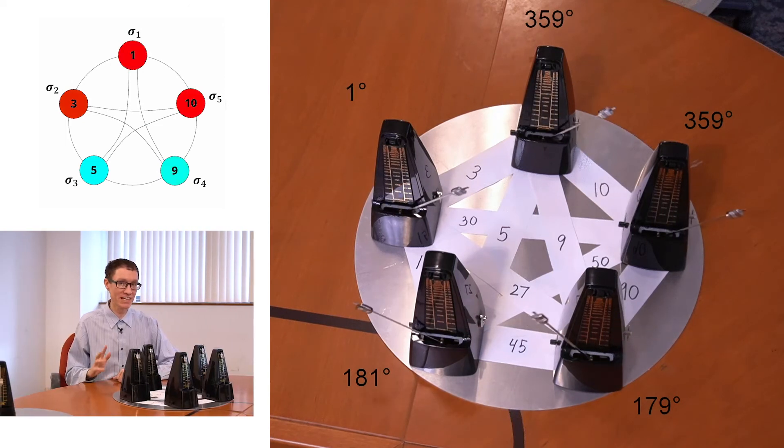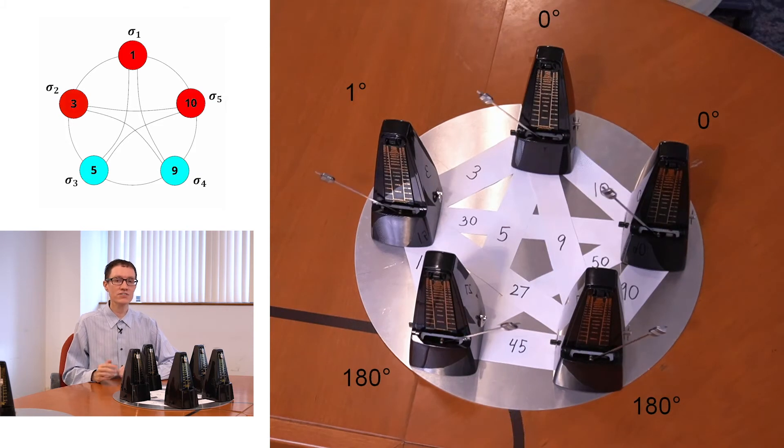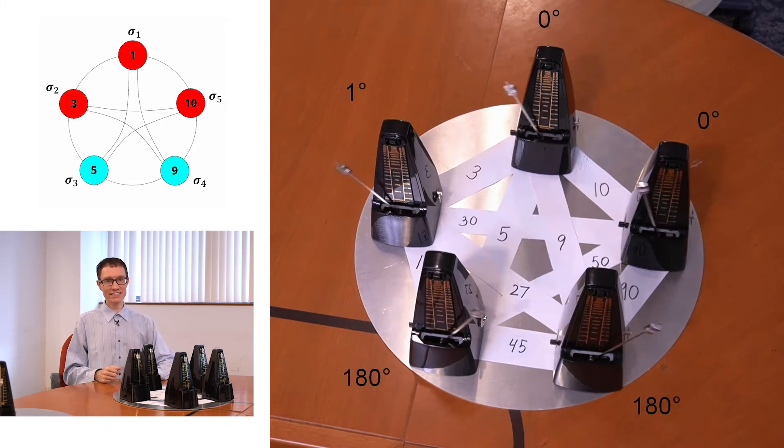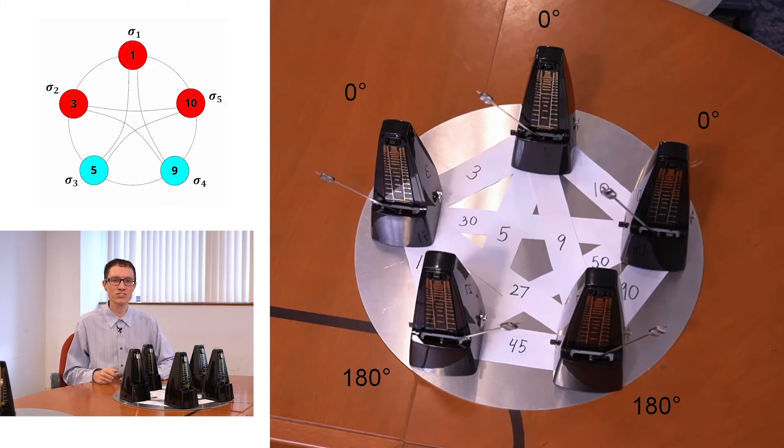Two of the metronomes ended up in phase with one another, and the other three ended up out of phase. So the set is now partitioned. The in-phase cells labeled 5 and 9 add up to 14, and the out-of-phase cells labeled 3, 1, and 10 also add up to 14. What we've just witnessed is a simulation — we haven't actually managed to mechanically program the coupling strengths between these metronomes. The simulations were carried out by Praveen, and we have just witnessed the outcome when everything works correctly.